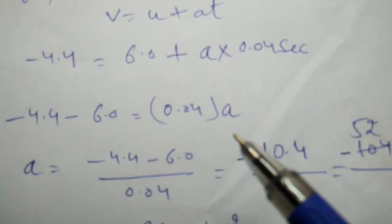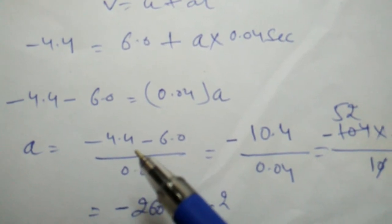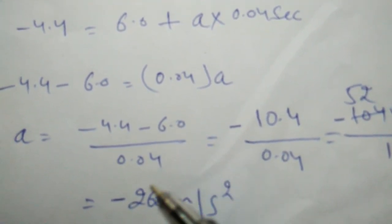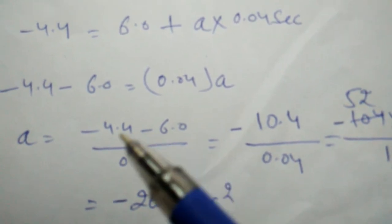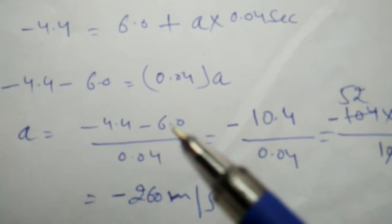So acceleration will be minus 4.4 minus 6.0 upon 0.04. Minus minus is going to be plus, and the sign will be minus.